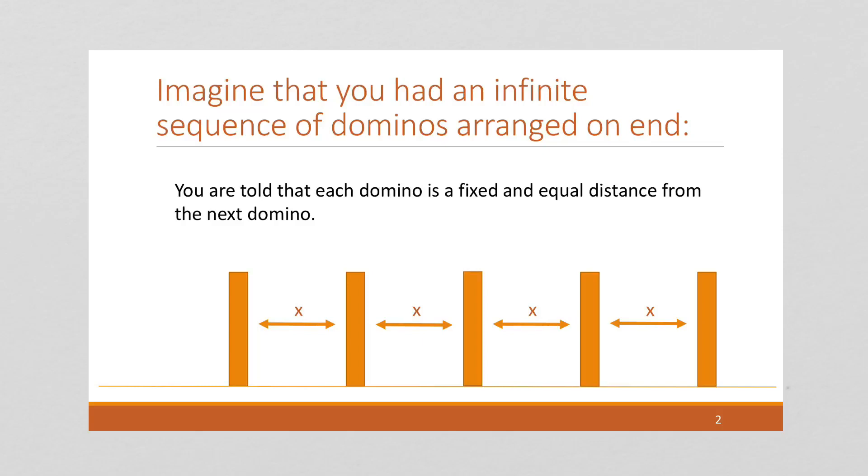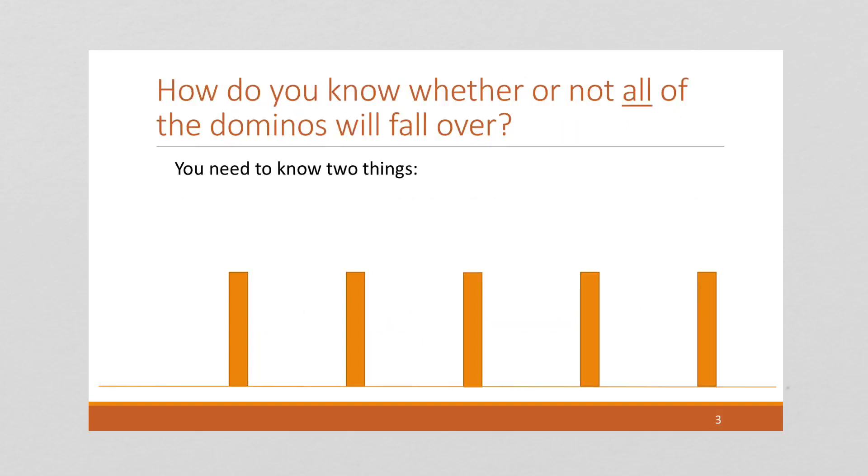Imagine that you had an infinite sequence of dominoes arranged on end, so it goes on forever, and you're told that each domino is a fixed and equal distance from the next domino. How will you know whether or not all of the dominoes will fall over?